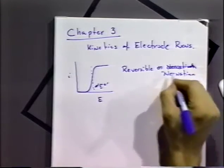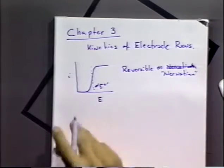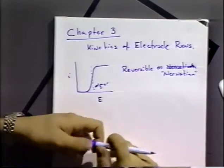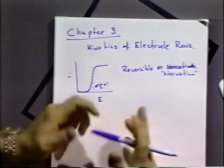A reversible or Nernstian process suggests that equilibrium is maintained at all points on that current-potential curve. So we can use the Nernst equation and simple concepts of mass transfer to derive that current-potential curve.